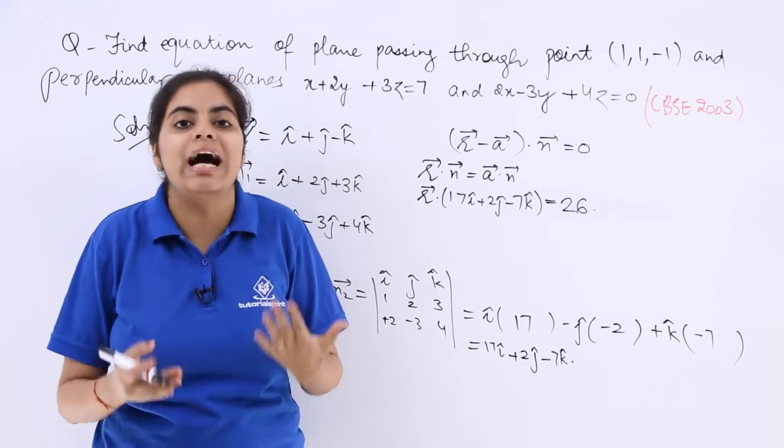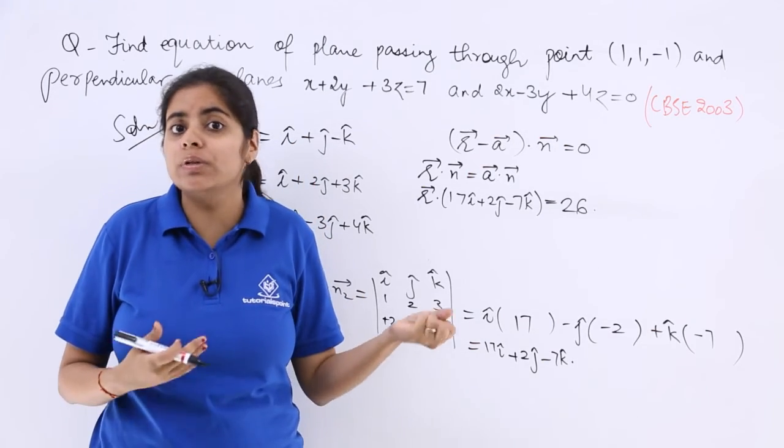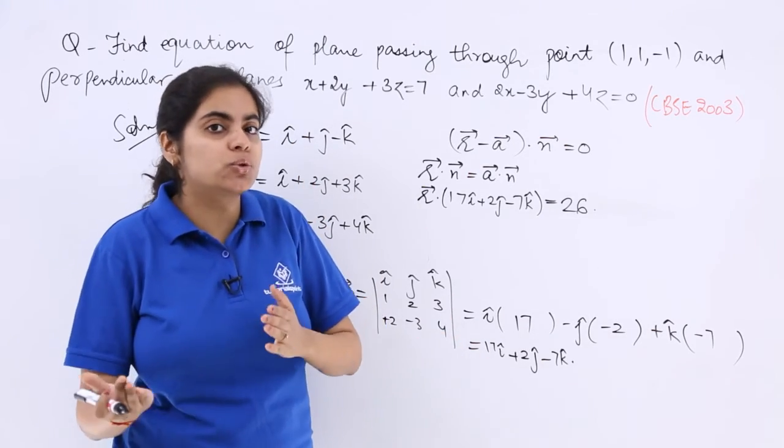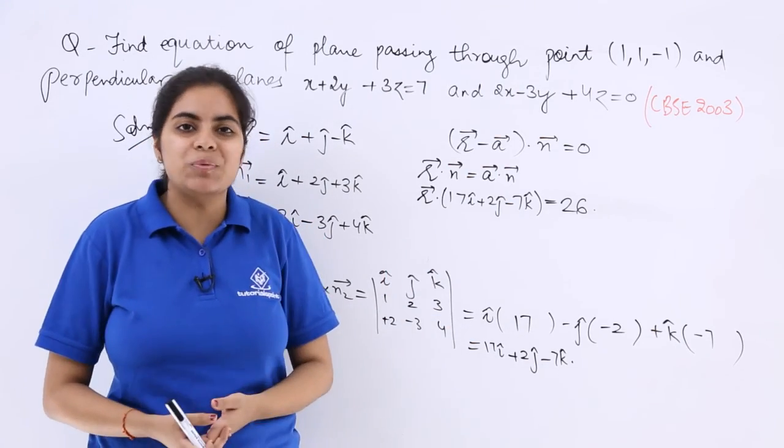How we found it: we had to first think upon what do we want to choose—do we want to go with the vector equation form or the Cartesian equation? Once we have decided, then we proceed further and obtain the answer.